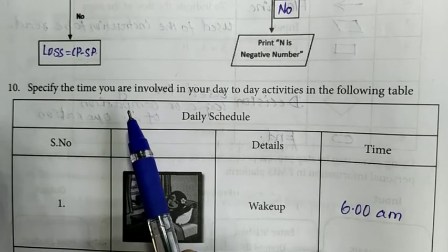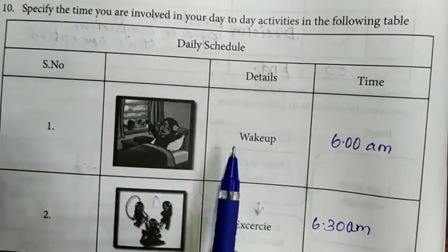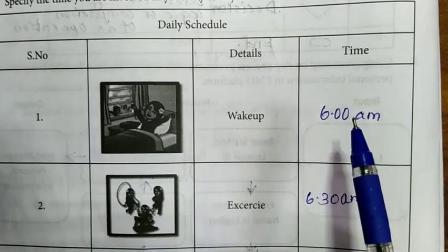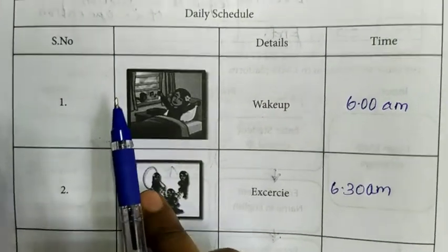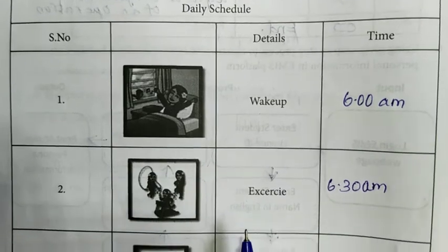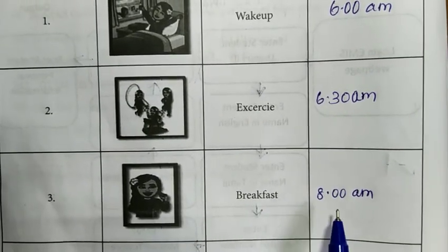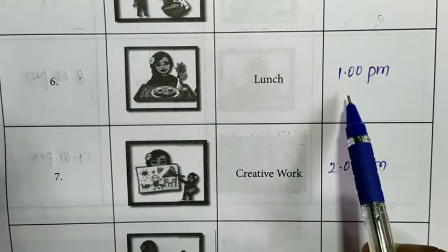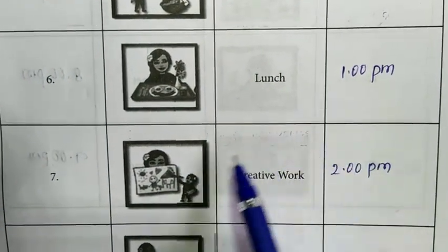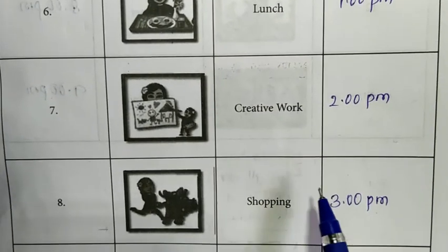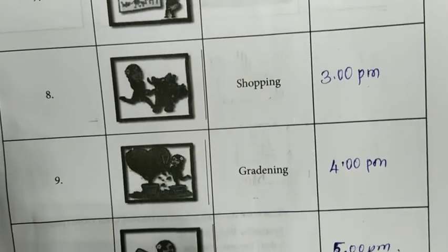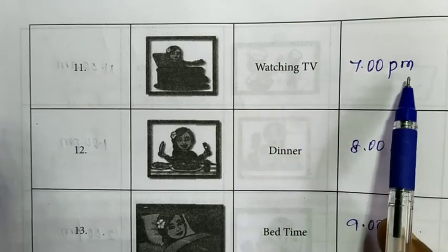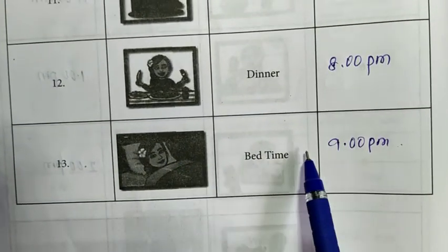Tenth question: Specify the time you are involved in your day-to-day activities in the following table. You can denote the timing of your day-to-day activities. Ten is playing, that is 5 pm. Eleven is watching TV, 7 pm. Twelve is dinner, 8 pm, and thirteen is bedtime 9 pm.